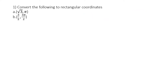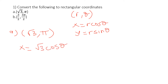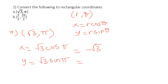Convert the following to rectangular coordinates. Polar coordinates are written in the form r, theta, and we know x equals r cos theta and y equals r sin theta. Starting with (√3, π): x equals √3 cos π, which equals negative √3, because cos π is negative 1. And y equals √3 sin π — sin π equals 0, so y equals 0. So the rectangular coordinates are (−√3, 0).